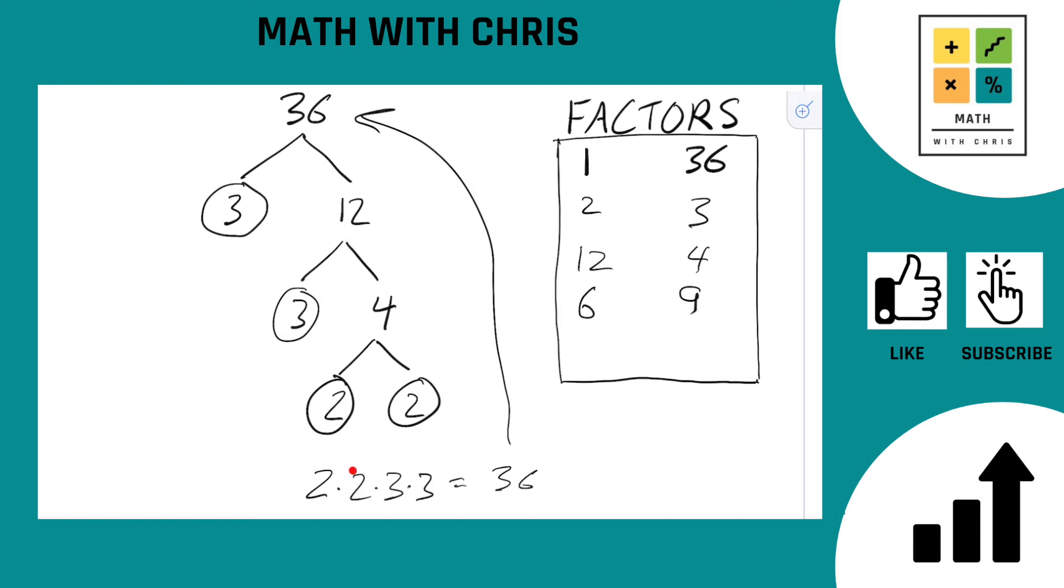What about 2 times 2 times 3? 2 times 2 times 3 would give us 12. We already got that. What about 2 times 3 times 3? 2 times 3 times 3 would be 18. That one's missing. Nice try, 18. Almost got away, but we got you. 18 gets banked.